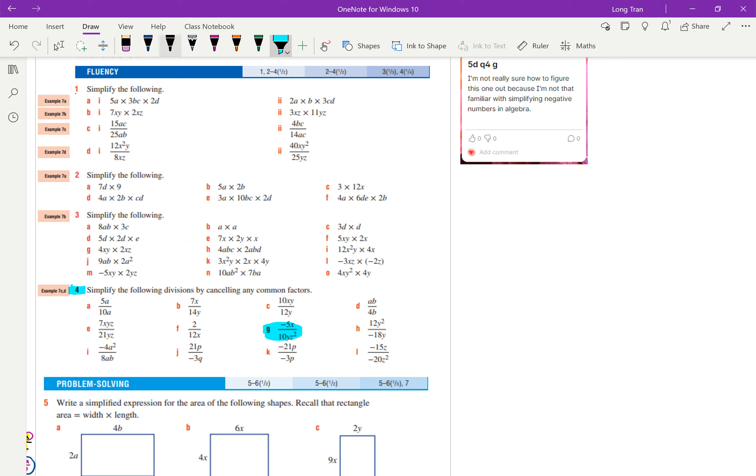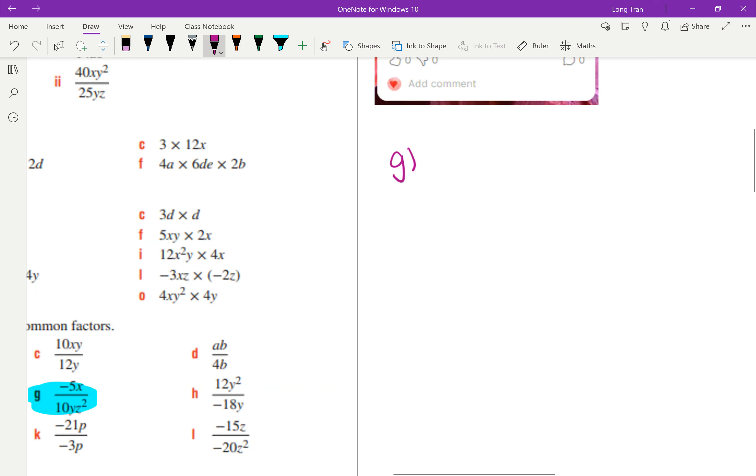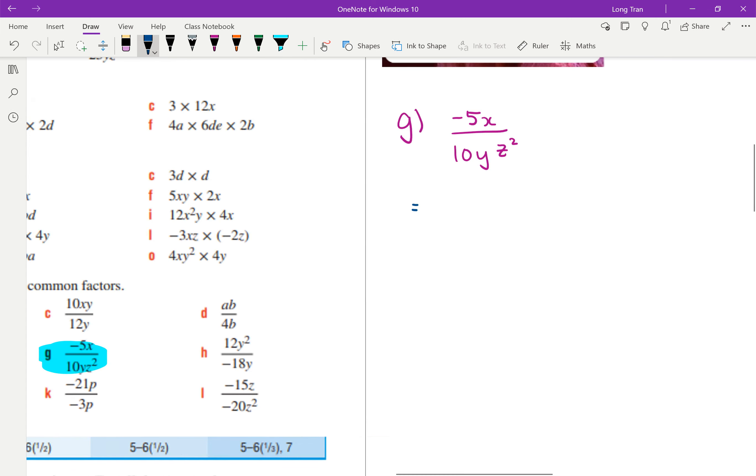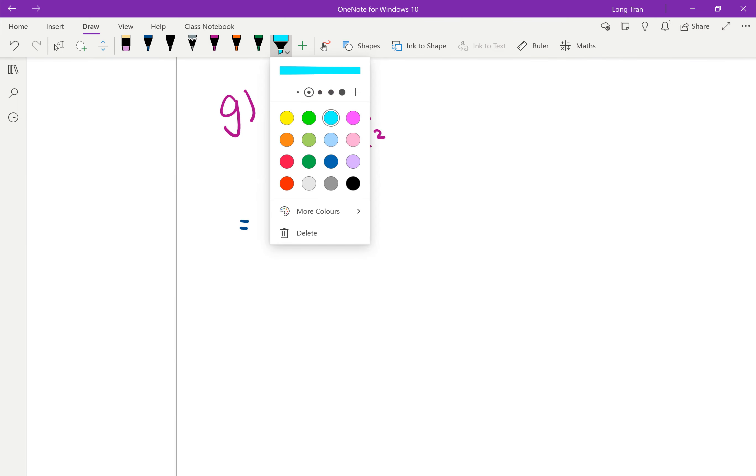Okay, so with this question, 4g, the negatives are similar to what we did back in integers. We've got negative 5x all over 10yz squared. So I would break up this fraction, because we can see that in the numerator, negative 5x basically means negative 5 multiplied to x. But with fractions, we know that we can actually separate with multiplication.